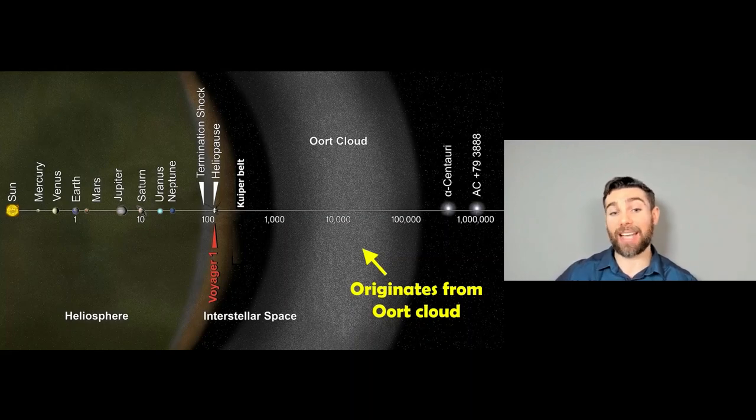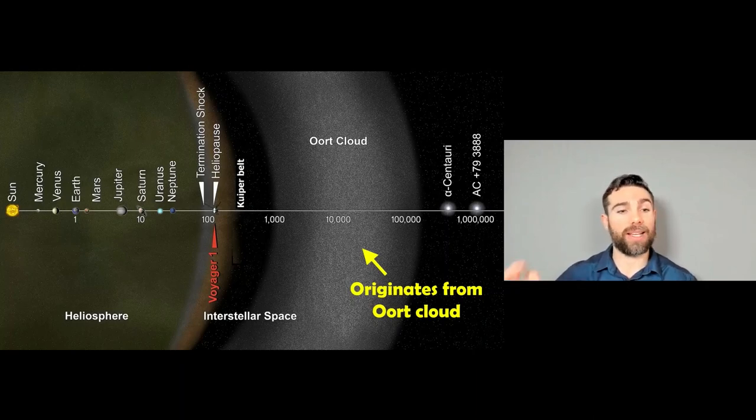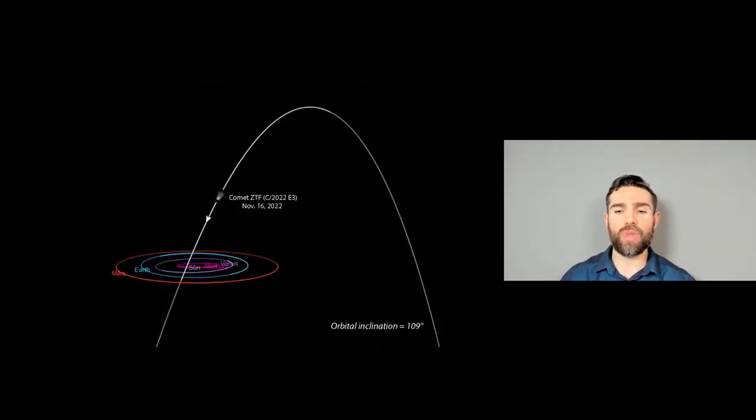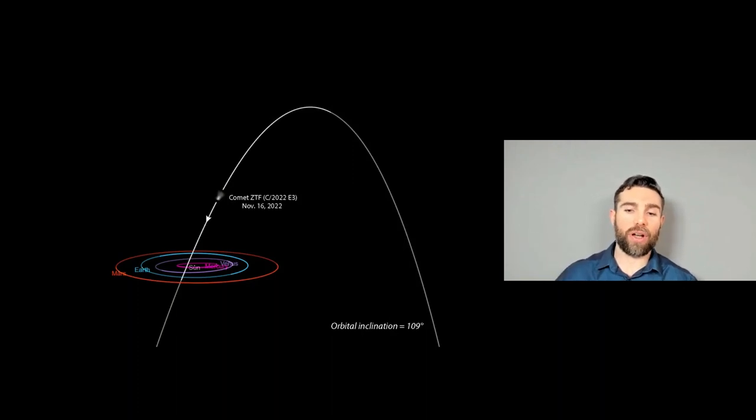So it's thought that it originates out in the Oort cloud, and it's coming into the solar system as we discovered it, and it's going to continue coming in up until about mid-January, when it'll be its closest to the sun. So this just gives you kind of an idea of its orbital inclination. So this was where it currently was on November 16, 2022, and it's moving kind of in towards the planetary plane of the orbits of the planets, and you can see that it's actually quite inclined. So it has an orbital inclination of over 100 degrees, whereas the planets are almost in the same plane.